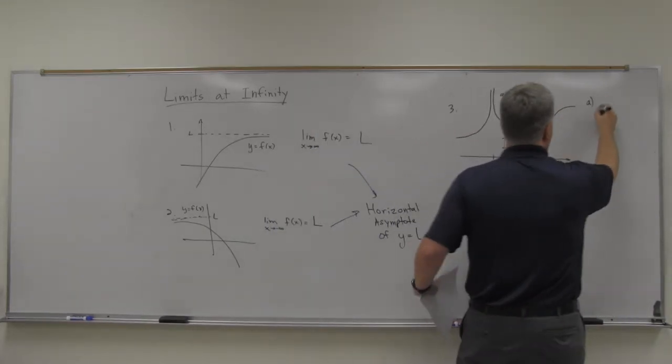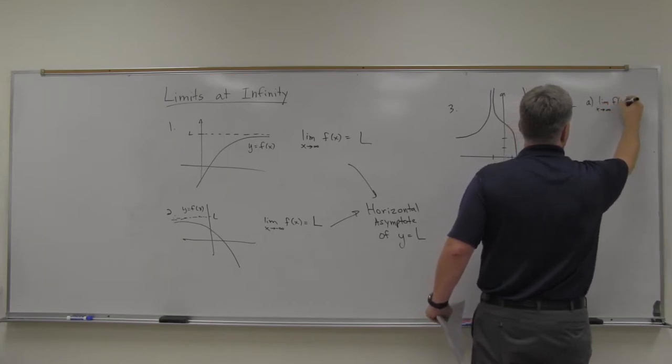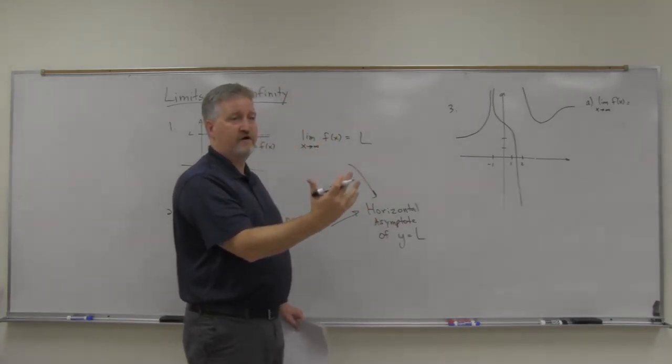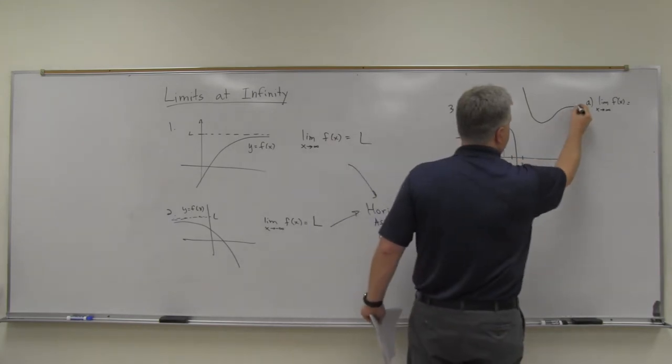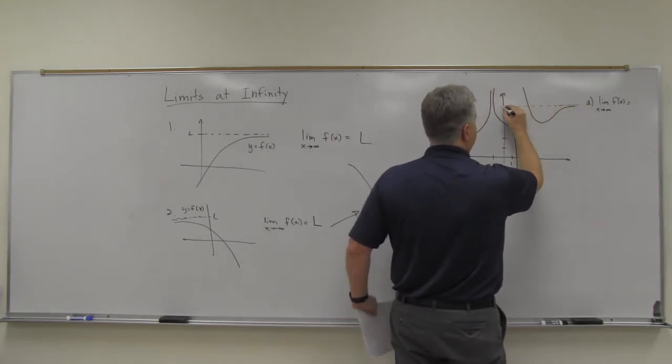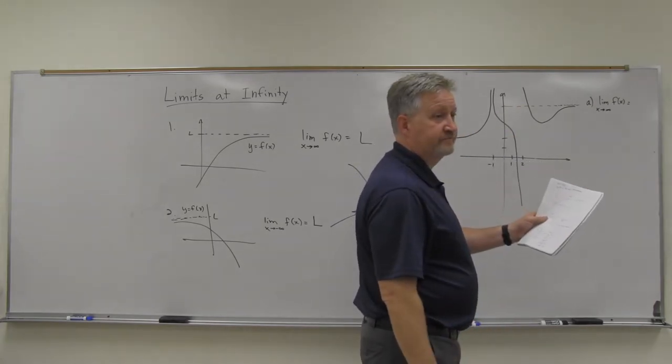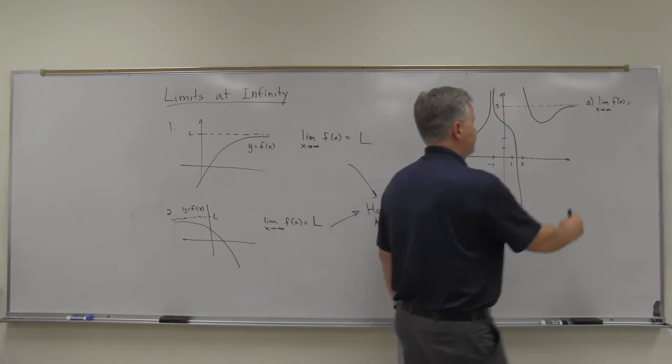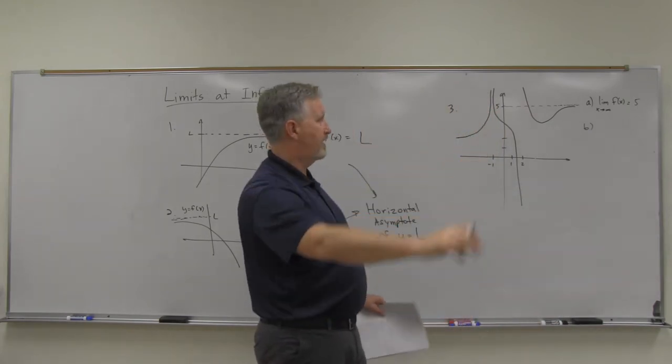So what would be the limit here as x goes to infinity? Well, it's what the graph levels off to on the far right. What happens on the far right? So it looks like it's leveling off somewhere in this vicinity, right? Whatever that is. You want to say five? Five sound good? It looks like it's going up.